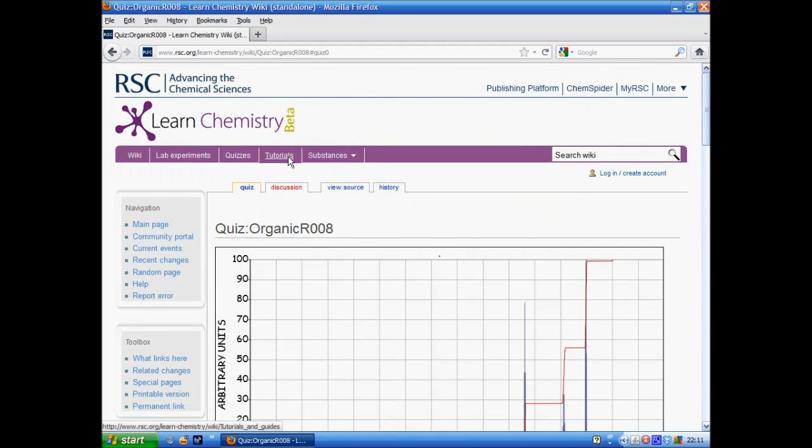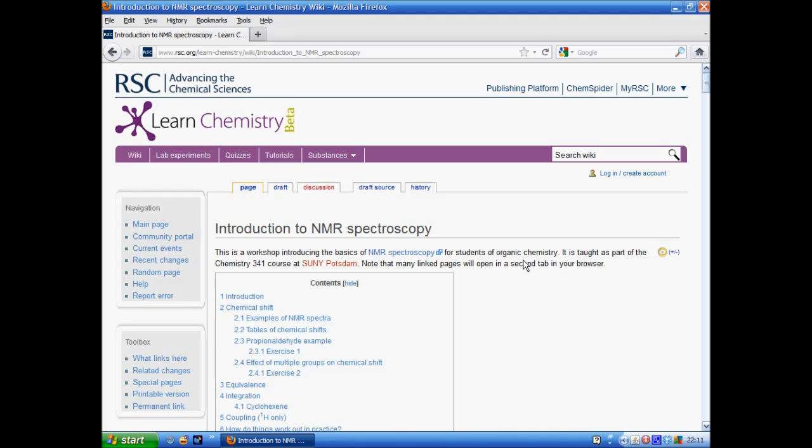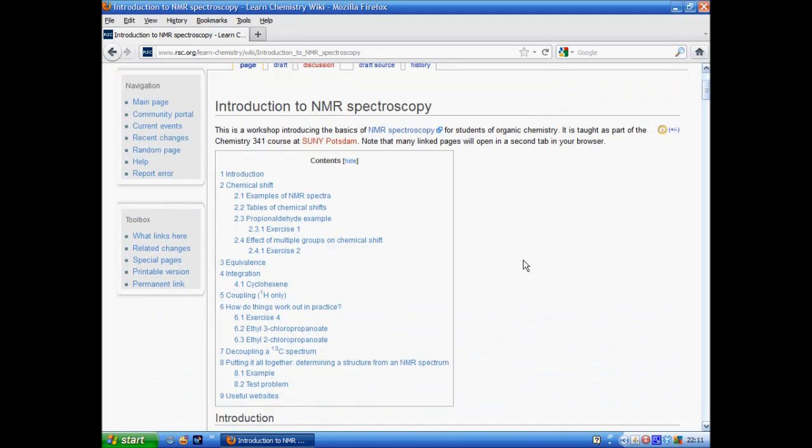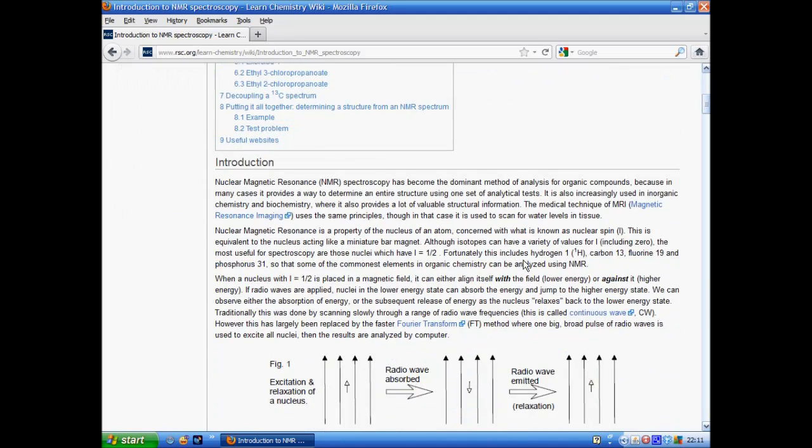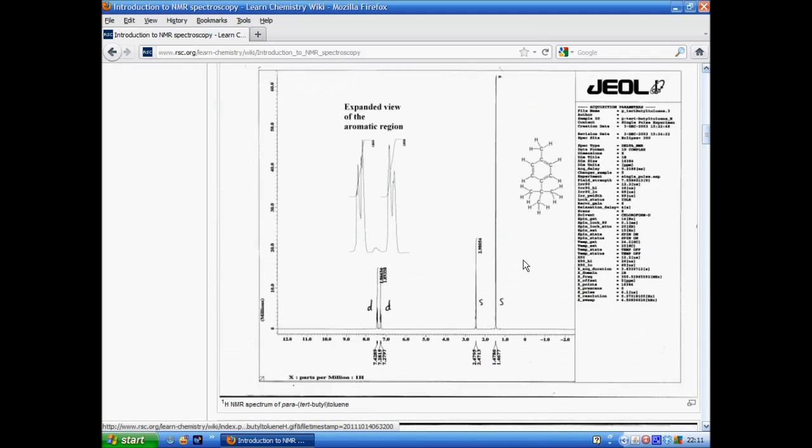There are also a few tutorials in the wiki. There are only three currently and we'll show you an example of one about NMR spectroscopy. This is basically a normal wiki page about a particular area of chemistry, in this case spectroscopy.